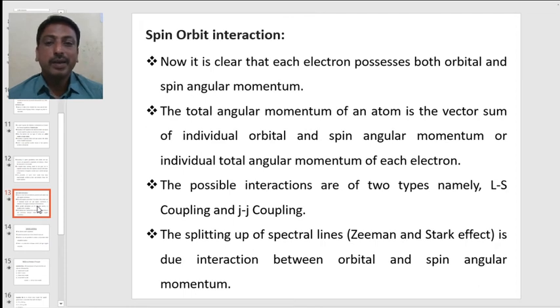Along with this vector atom model, we also come across that there will be an interaction between spin as well as orbital angular momentum due to which there will be a splitting up of spectral lines into number of components. From the above discussion, it is clear that each electron possesses both orbital as well as spin angular momentum. Hence, while calculating the total angular momentum of an atom, we used to add vectorially the individual orbital as well as spin angular momentum or individual total angular momentum of the electron.